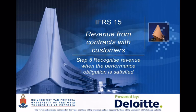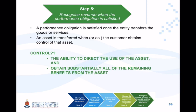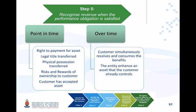The final step in the five-step process is to recognize revenue when the performance obligation is satisfied. A performance obligation is satisfied when there is a transfer of control from the seller to the buyer. The standard offers various indicators of when control can pass; it may be sufficient to meet one or several of these indicators, requiring some professional judgment.